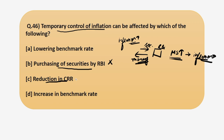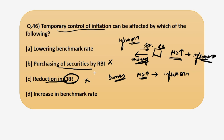The second option is reduction in CRR. As you all know, CRR is the portion of its deposits that a bank has to maintain with RBI. If RBI reduces CRR, that directly means banks will have more money to lend. If more money is available to lend, people will start borrowing more, and therefore money supply in the economy will again increase in this case.